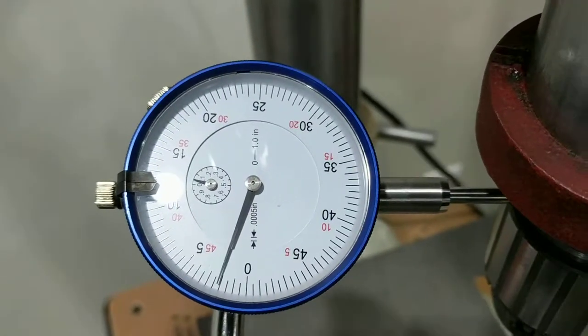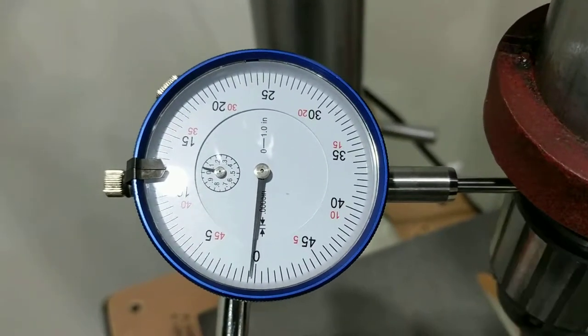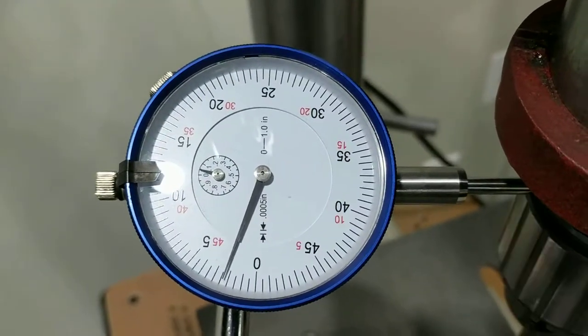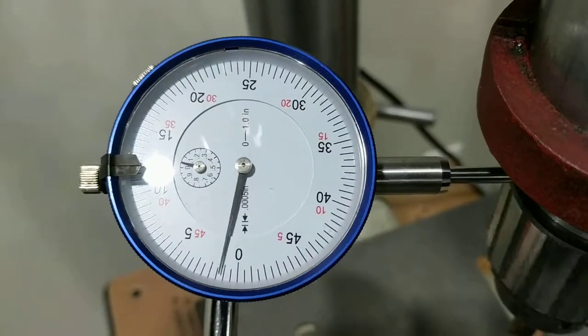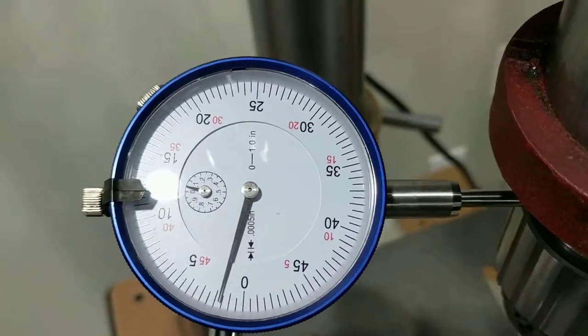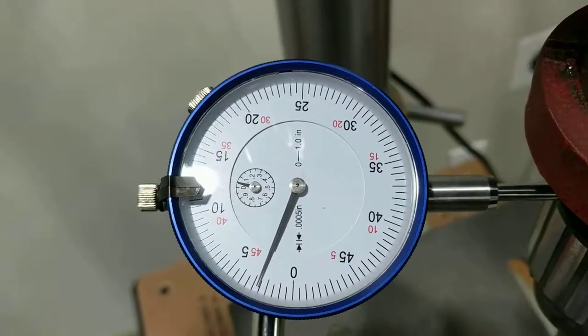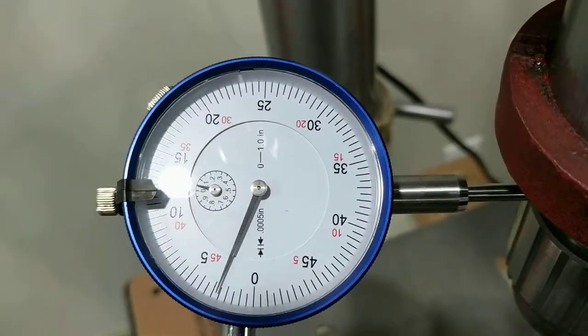Which is pretty good for a 40-year-old drill press at full extension. Moving it, rotating it all the way around so you can see when it gets all the way out. I'd say about two and a half thousandths. Very cool.